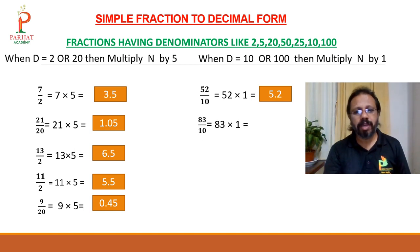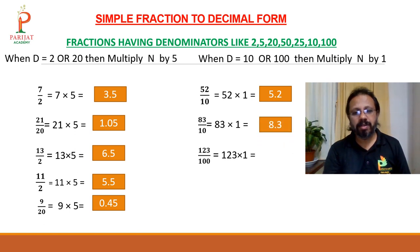83 upon 10: multiply 83 by 1 to get 83. Since the denominator is 10, leave the last digit and give the decimal — answer is 8.3. 123 upon 100: multiply 123 by 1, but the denominator is 100 so leave the last 2 digits and give the decimal point — answer is 1.23.